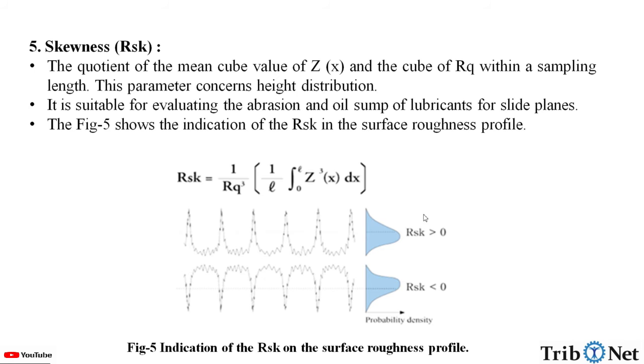And the formula for RSK is given by 1 by Rq cubed, the whole bracket 1 by L in the limit of 0 to L, Z cubed of x dx. Here we can see how the RSK variation is found in the surface roughness profile. RSK is less than 0 and RSK is greater than 0. The probability density graphs are given.